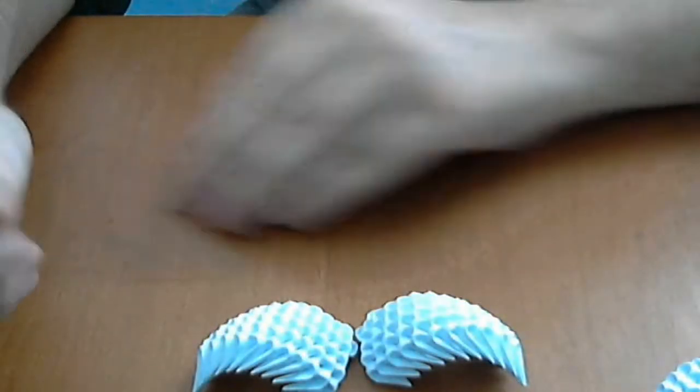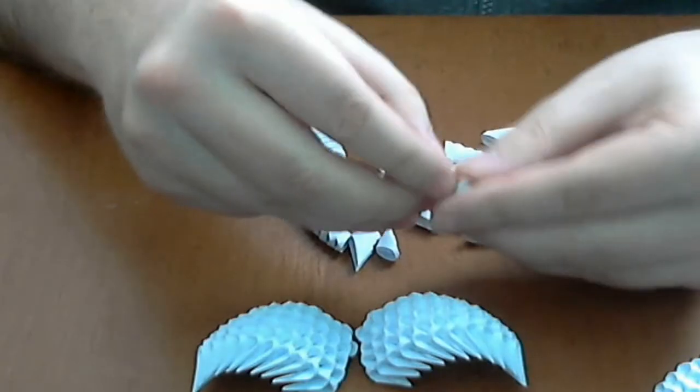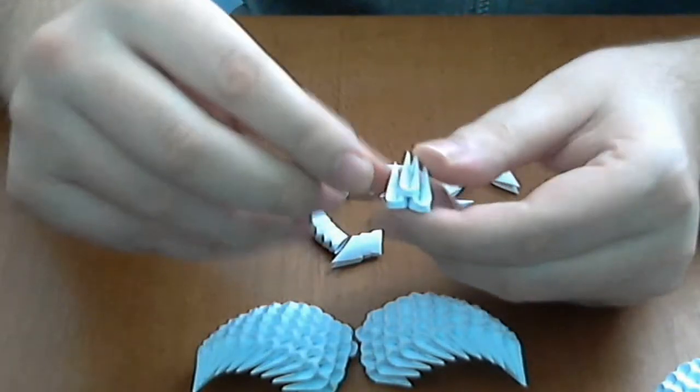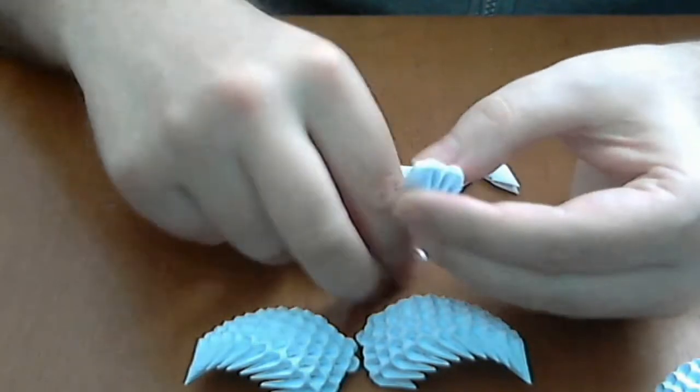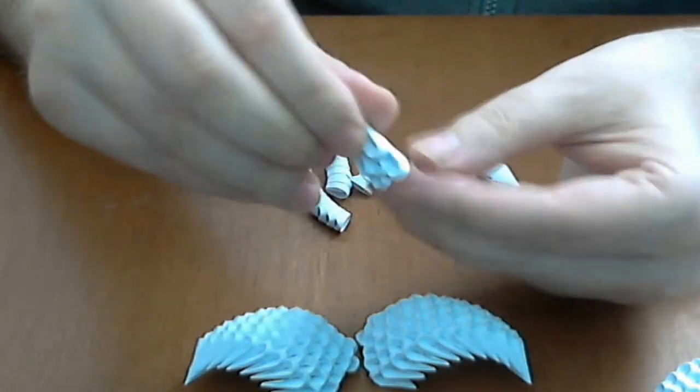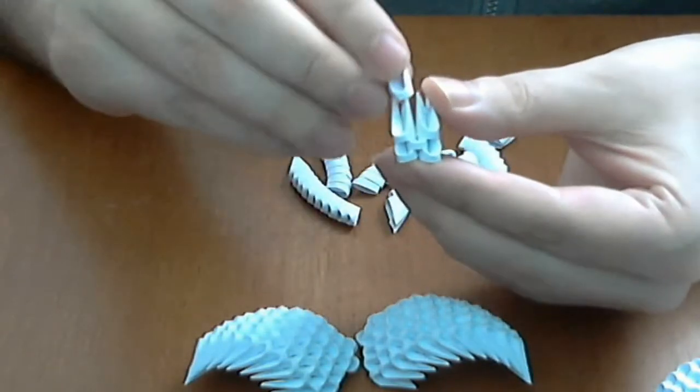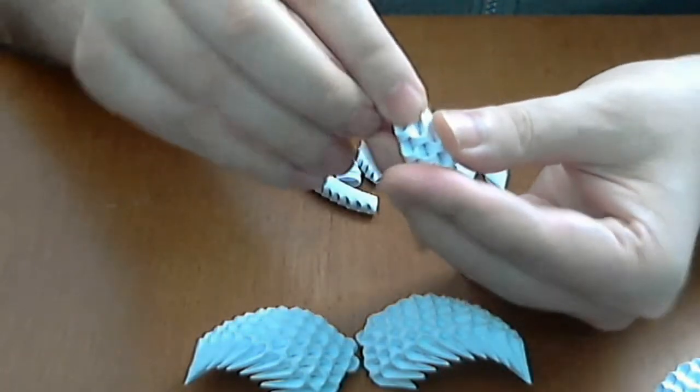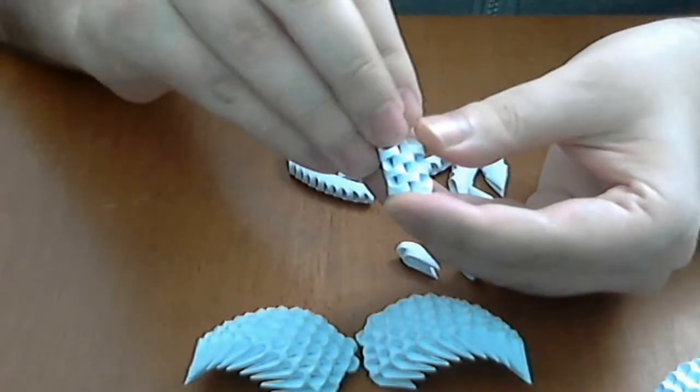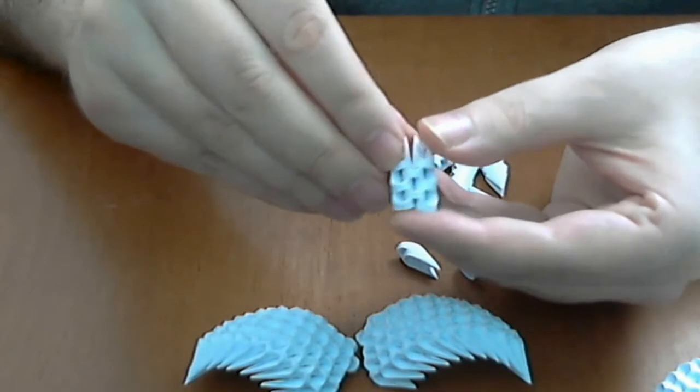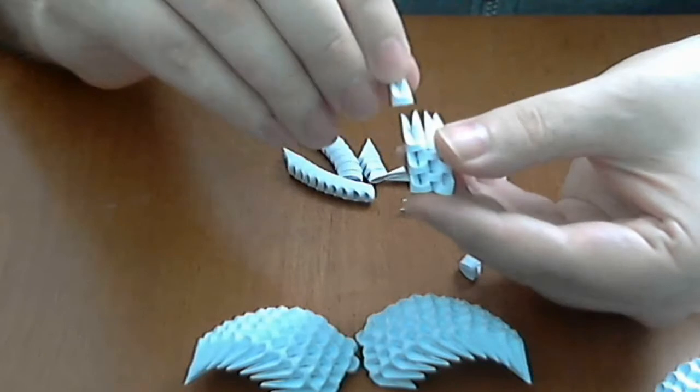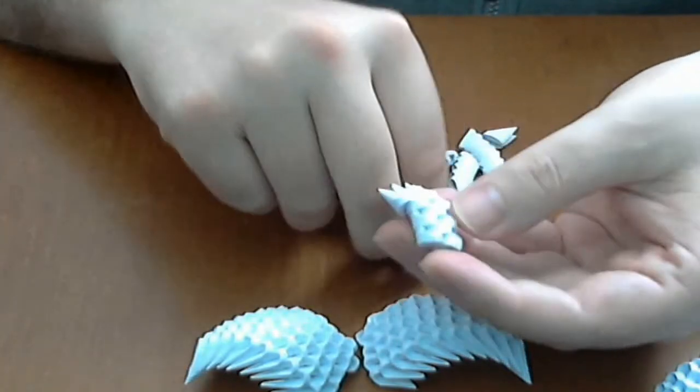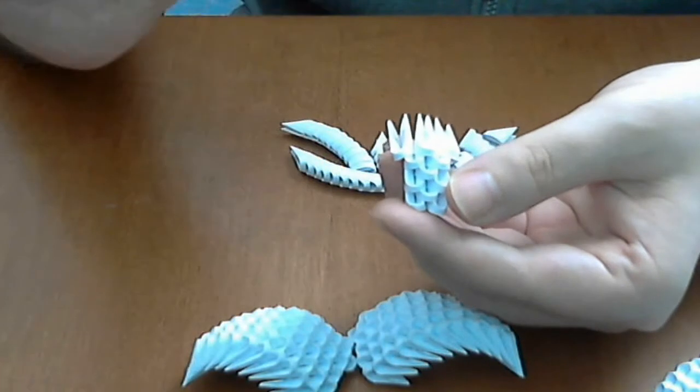And now we will make the tail. For the tail, we will start in the same way. Put 3 pieces like this, then 2 above, then another one, and 2 above them. And now we will increase to 3 pieces. Here 1, and 1 here, and another 1 here. Very good.